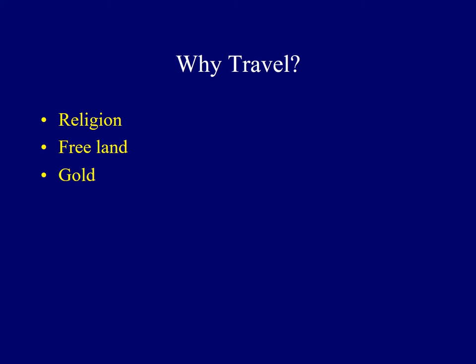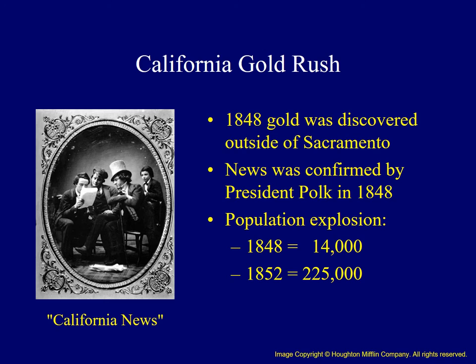One additional factor which led people to travel to the American West was the discovery of gold in California. In January of 1848, gold was discovered outside of Sacramento at a mill owned by John Sutter. President Polk confirmed the news in a message to Congress in December of 1848. The first huge wave of prospectors looking to strike it rich came in 1849. Between 1848 and 1852, the non-white population of California skyrocketed from 14,000 to over 225,000.